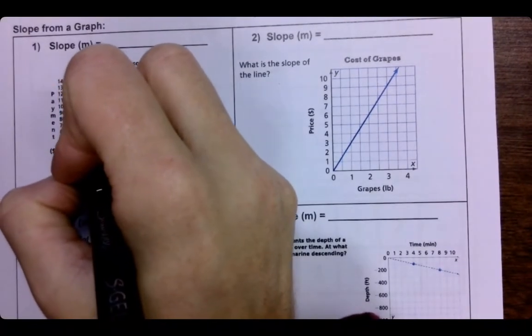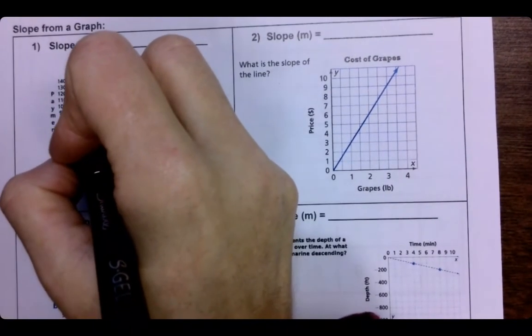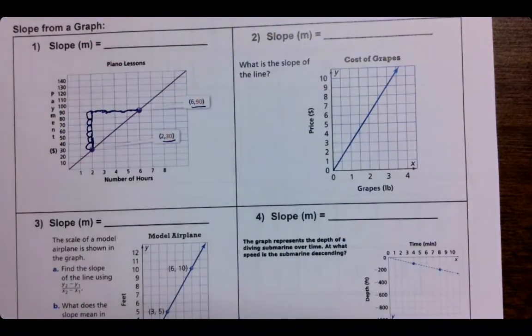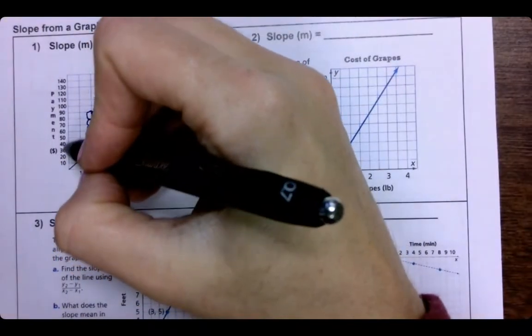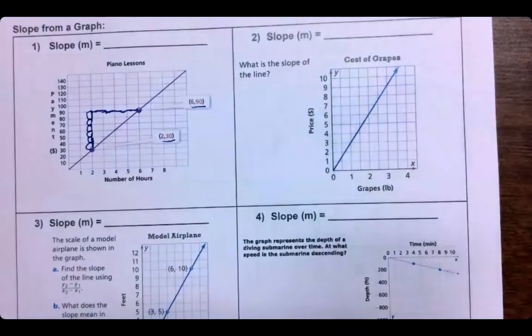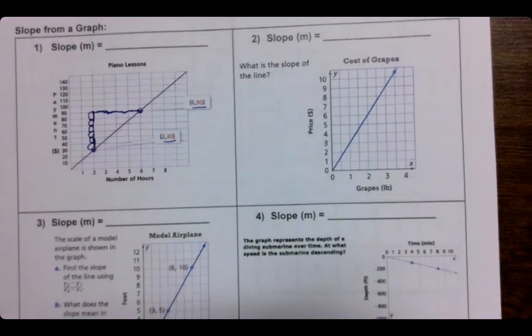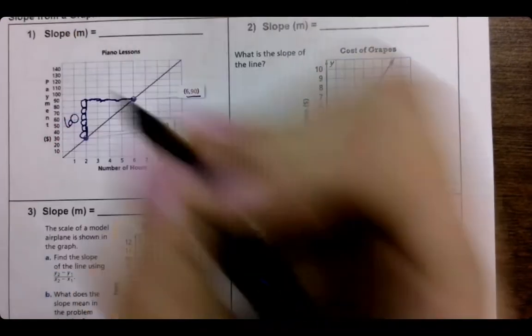So this is one, two, three, four, five, six, but notice these lines are going by tens. So if it's six boxes going by 10 apiece, that's really 60.